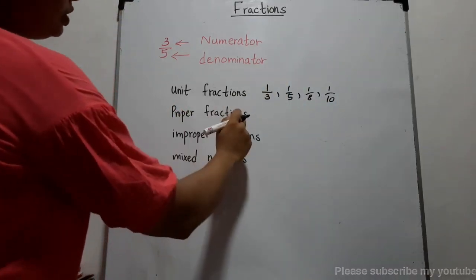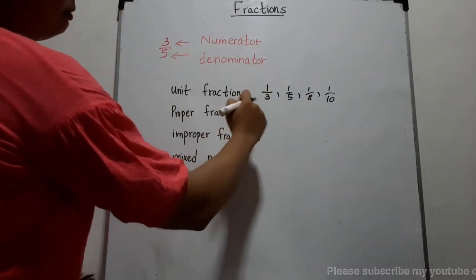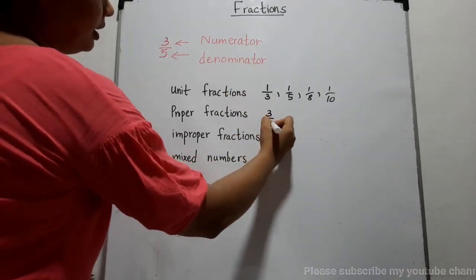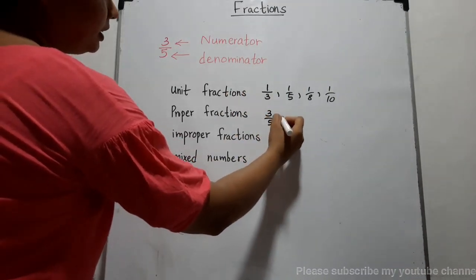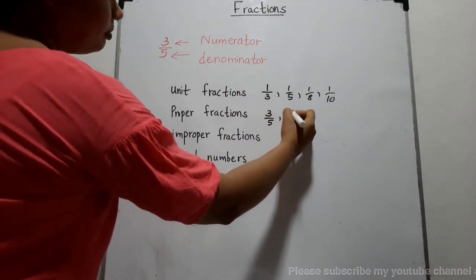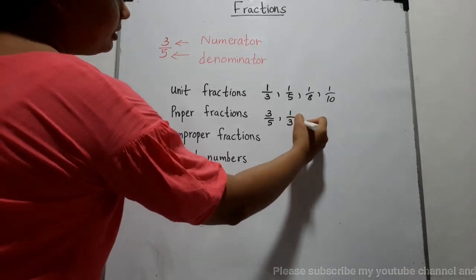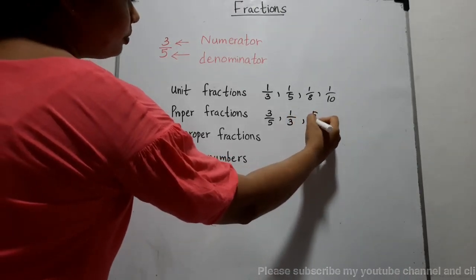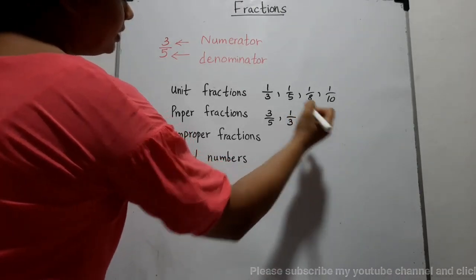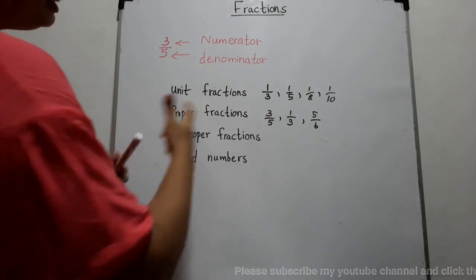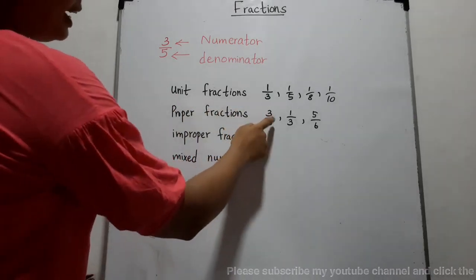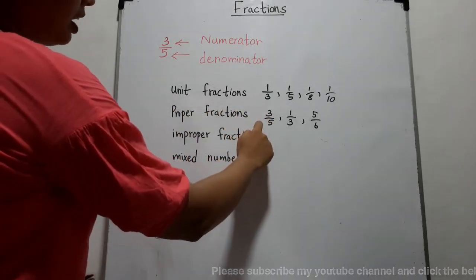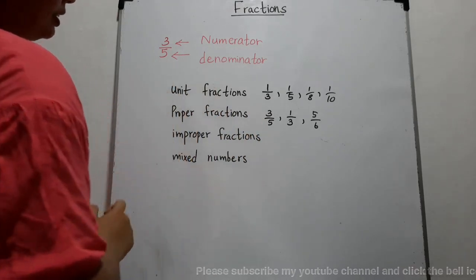For proper fractions — such as 3 fifths, 1 third, 5 sixths — the numerator is less than the denominator. Such fractions are called proper fractions.